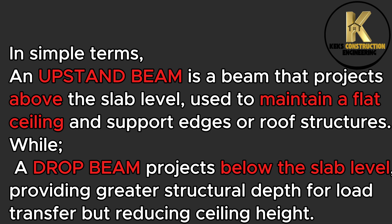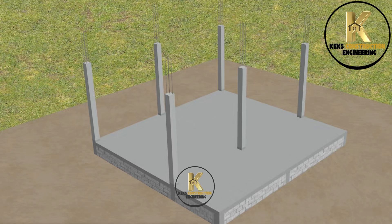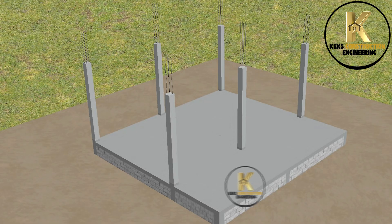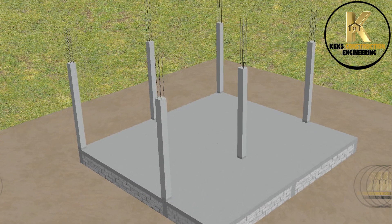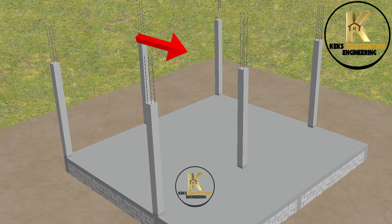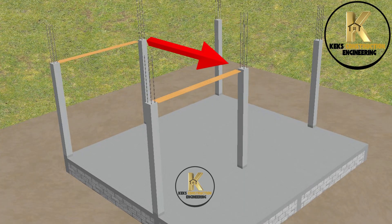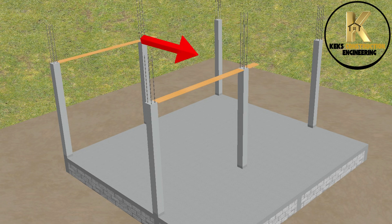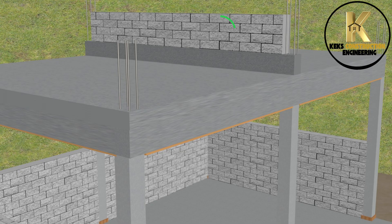Let's move to site to show how the upstand beam works. The structural engineer wanted to introduce a 450mm beam to connect the two middle columns for stability, but the architectural design did not allow any drop beam in the middle. To solve this problem, the structural engineer decided to use an upstand beam at the middle. This alone will solve the problem completely.